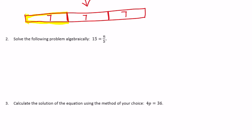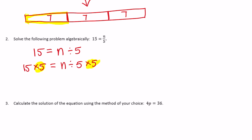Solve the following problem algebraically: 15 is equal to n over 5, which is n divided by 5. To get rid of the divided by 5, multiply both sides by 5: n divided by 5 times 5, and 15 times 5. So n equals 75. We can verify: is 15 equal to 75 divided by 5? Yes, it is.